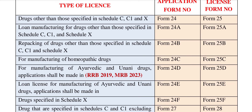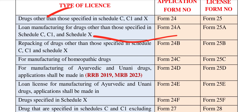Loan manufacturing of drugs — that is not those specified in Schedule C, C1, and X. This is loan manufacturing for normal (allopathic) drugs. So it is normal drugs — loan manufacturing. That is Form A. So Form 24A is the loan application form for allopathic drugs.